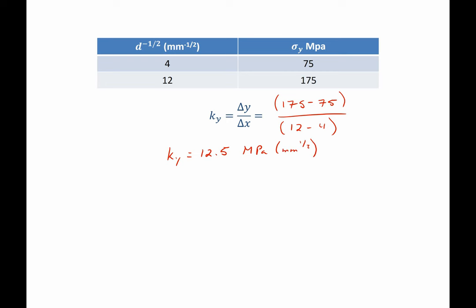Now that we know k-sub-y, we can go ahead and solve for sigma-naught by writing out one of the equations we had on the previous page. So 75 megapascals will be equal to sigma-naught, which we're going to solve for, plus 12.5 megapascals millimeters to the one-half multiplied by 4 millimeters to the negative one-half value.